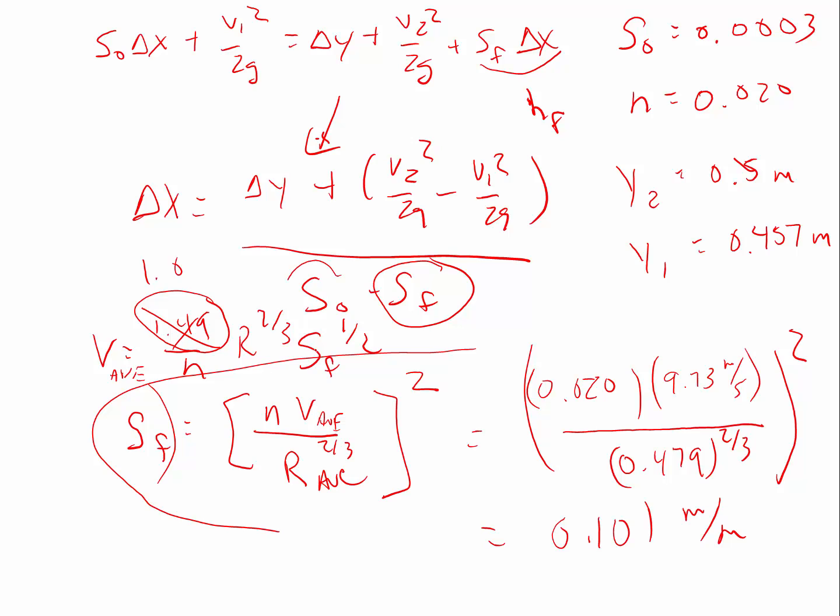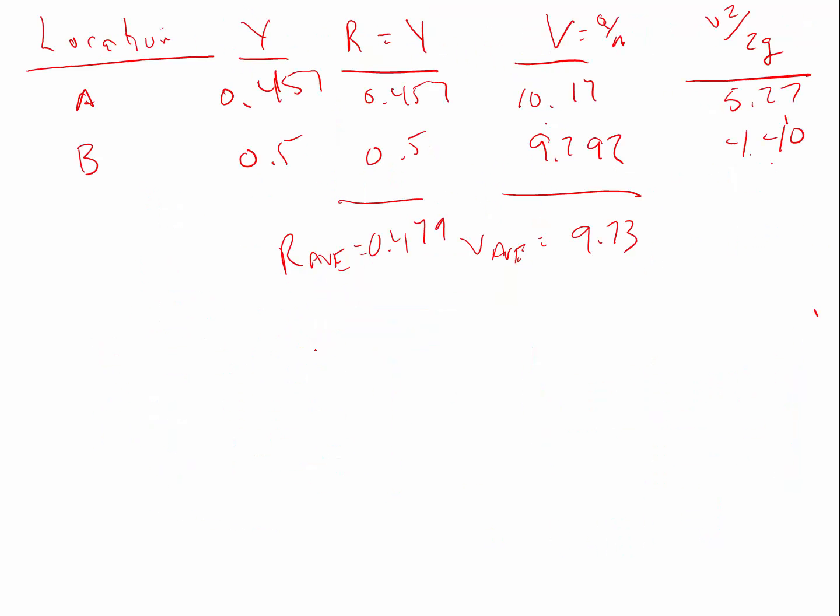I've already got the s sub o. And if you note, we're already solving for the v squared over 2g, and we're basically having to work through the problem here. So now I've got the delta x.